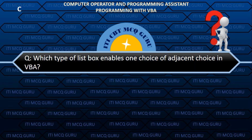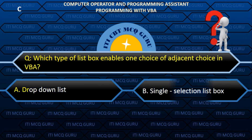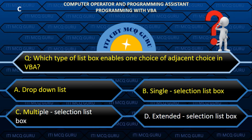Which type of list box enables selection of one or adjacent choices in VBA? Answer: C. Multiple selection list box.